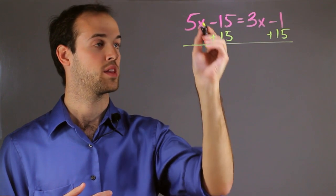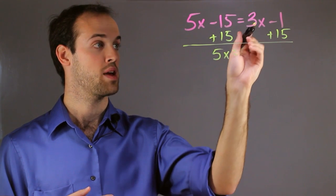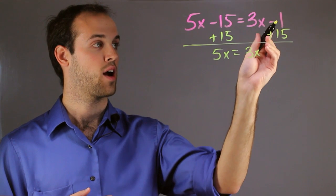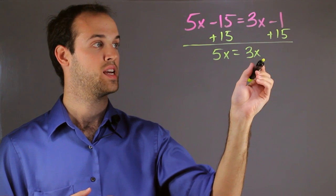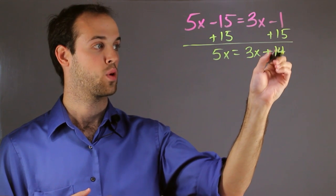And what I'm left with is 5x, because that didn't change, equals 3x, that didn't change, and here I have a negative 1 plus 15, which is 14. So I write a positive 14.